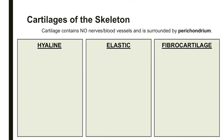The three types of cartilage found in the body are hyaline cartilage, elastic cartilage, and fibrocartilage. In embryos, the skeleton is predominantly made up of hyaline cartilage, but in adults, most of the cartilage has been replaced by more rigid bone.